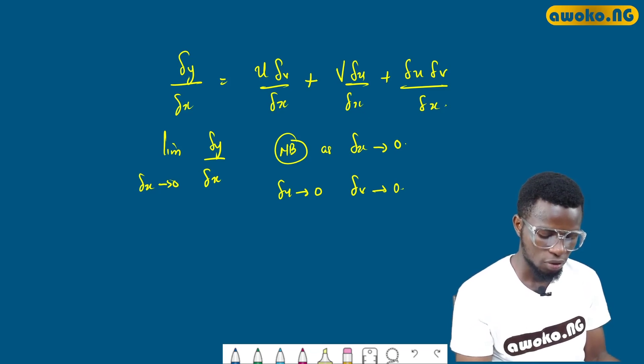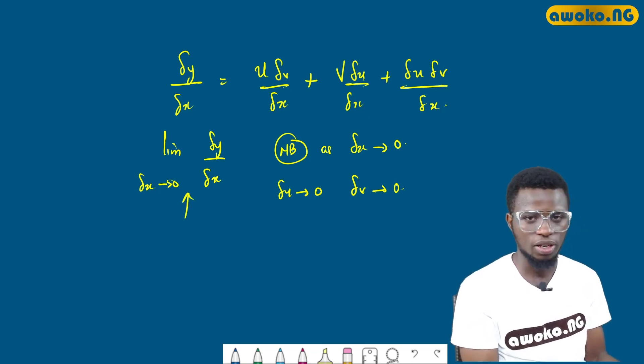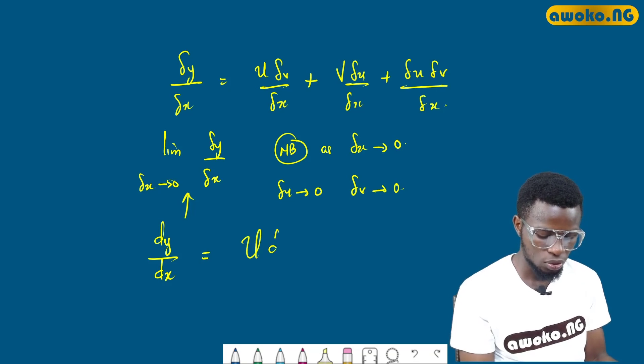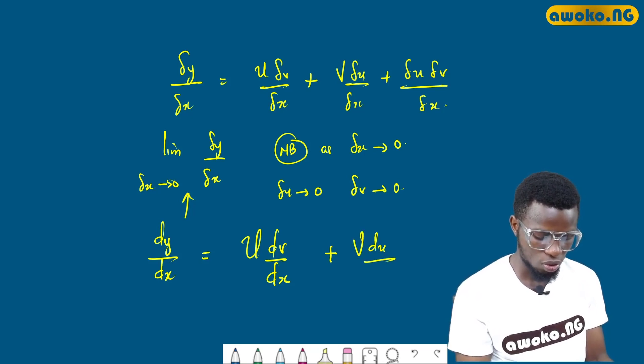And this of course, when after getting the limit, it will change to dy/dx which is equal to u(dv/dx) plus v(du/dx).